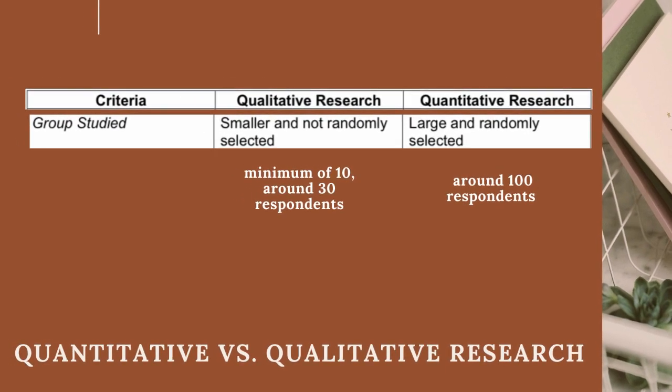Group studied: Qualitative research studies smaller and not randomly selected participants — a minimum of 10, around 30 respondents. Quantitative research studies large and randomly selected participants, around 100 respondents.